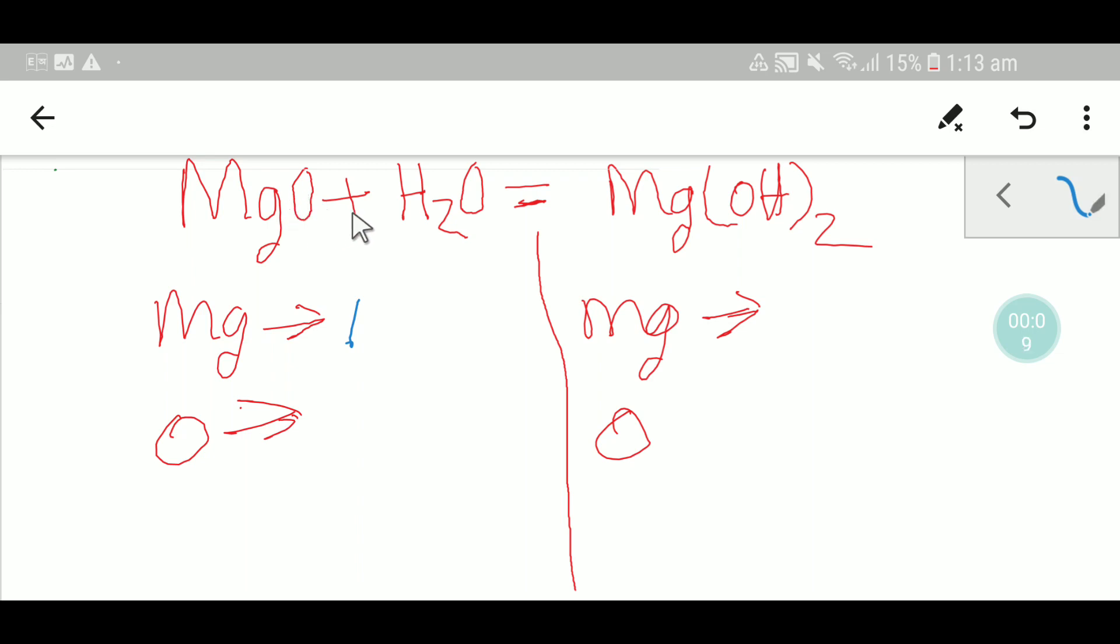On the left hand side we have here one magnesium and here we have one plus one that is two oxygen. And here we have two hydrogen.